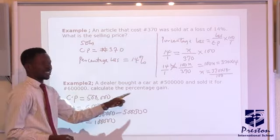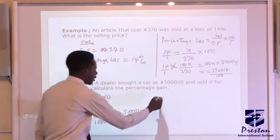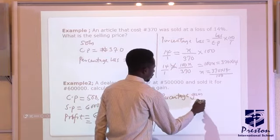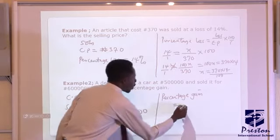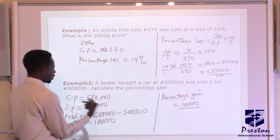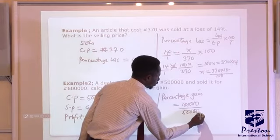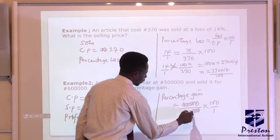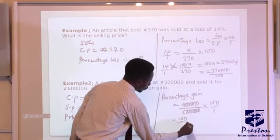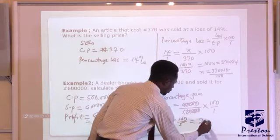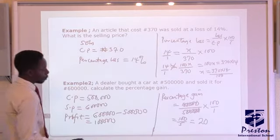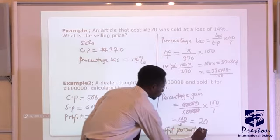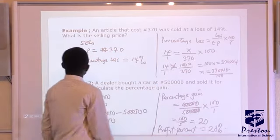The question says calculate the percentage gain. Using the formula: percentage gain equals gain over cost price times 100. Our gain is 100,000 and the cost price is 500,000. So we have 100,000 over 500,000, times 100. We cancel the zeros — 100,000 over 500,000 simplifies — leaving 100 over 5, which equals 20. Therefore the dealer made a percentage profit of 20%.